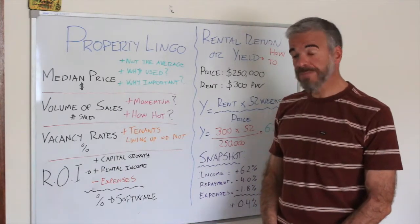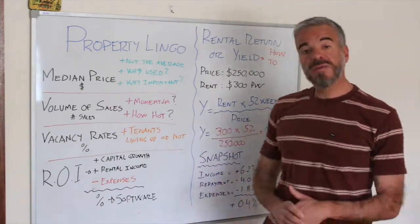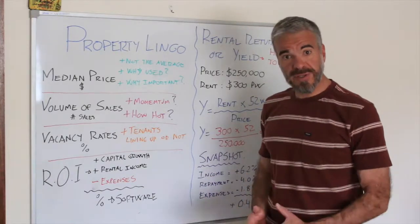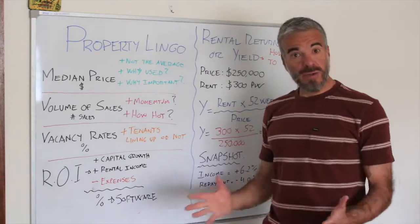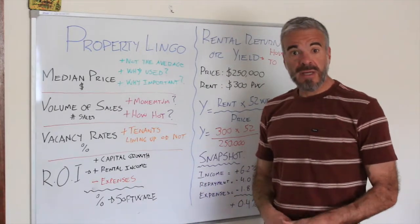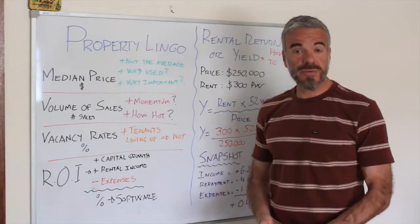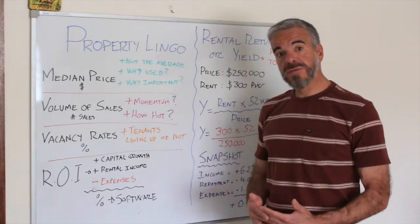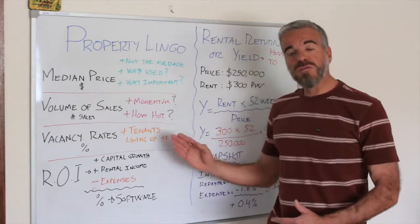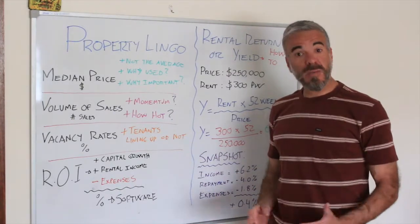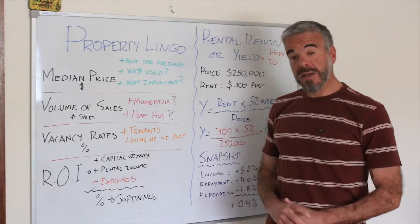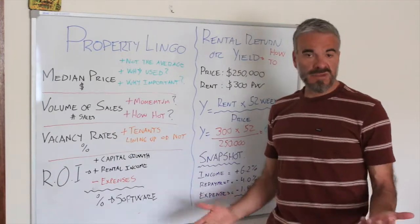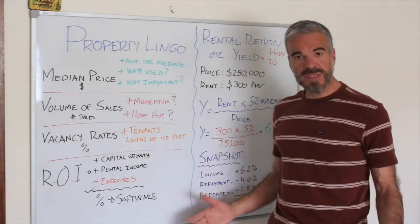The next term is volume of sales. Volume of sales indicates the momentum, or how hot a property market is — it's expressed as a number. For example, if you look at a particular suburb and last year sales were 200 at this time of year and now they're 400, you can see there's momentum in the market. It's a good indicator of how hot the market is and how many people are going in and out at any given time.